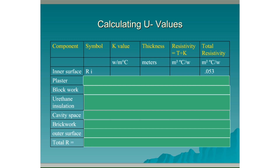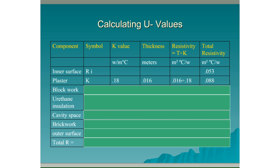The inner surface (symbol Ri) has a resistivity of 0.053, entered directly into the totals column. The plaster has K value 0.18 and thickness 0.016 m (16 mm): 0.016 ÷ 0.18 = 0.088. The block work has K value 1.33 and thickness 0.102 m (102 mm): 0.102 ÷ 1.33 = 0.076.